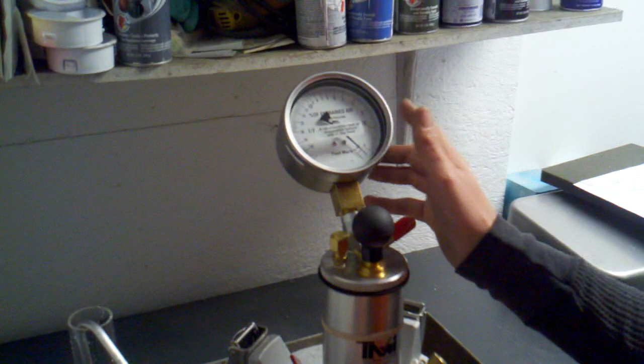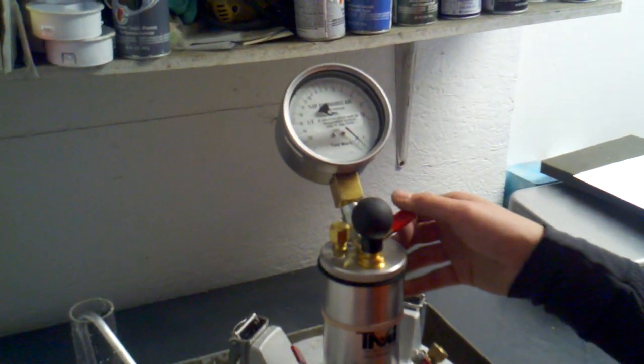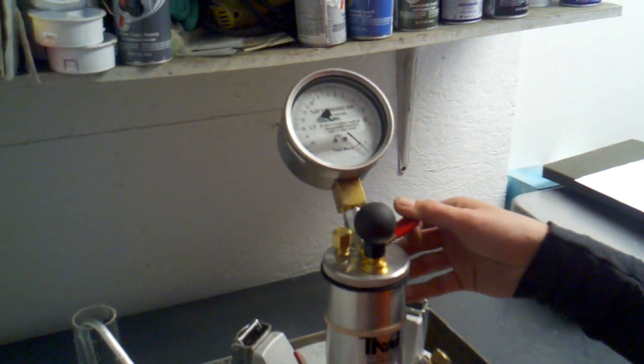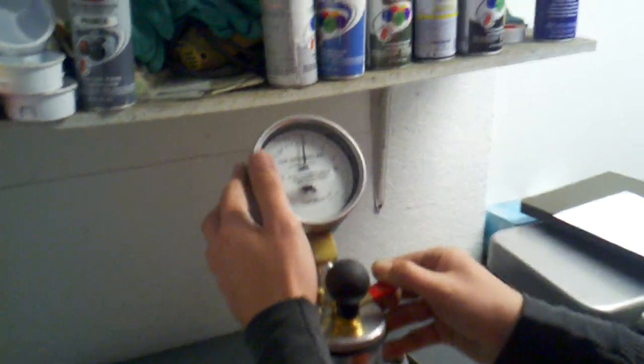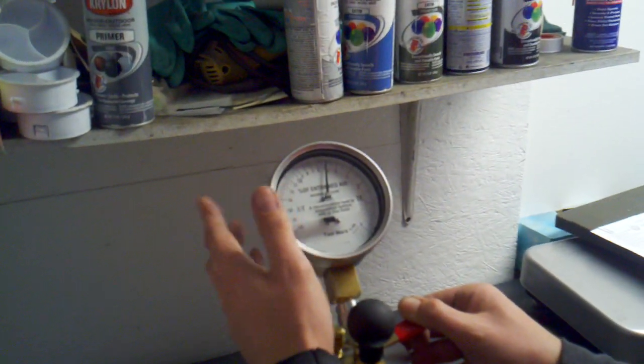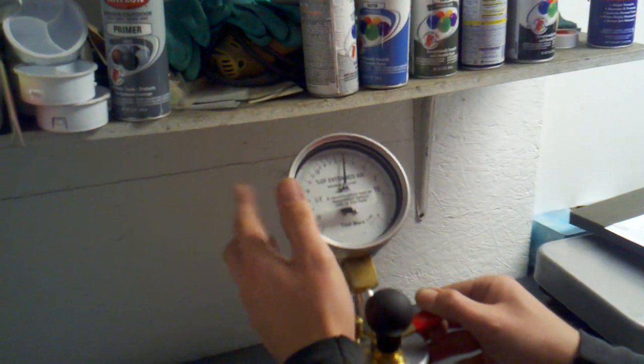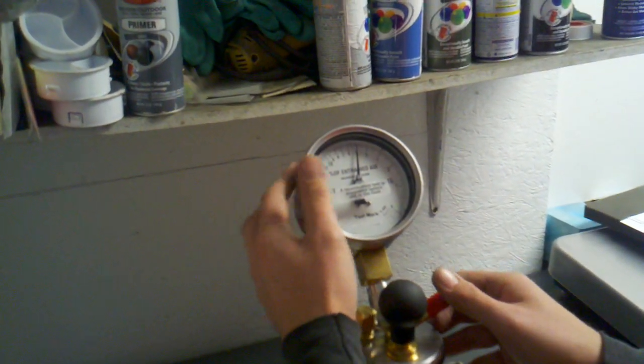Once you've got it rested at the percentage point there, you can press it down again to inject the air. And then while holding the lever down, you can tap the gauge until it goes. And it should read 5%.